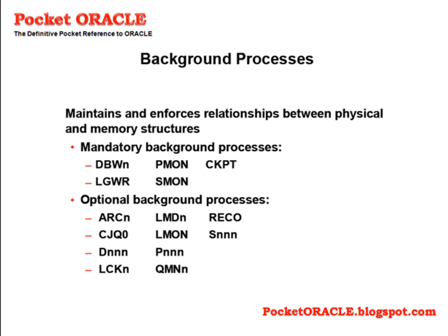The mandatory background processes are DBWN, PMON, SMON, CKPT, and LGWR. There are also a number of optional background processes. Some of the background processes can be tuned. For example, you can decide how many database writer processes to launch, and you can to a certain extent control how frequently they will write changed data blocks from the database buffer cache to the data files.